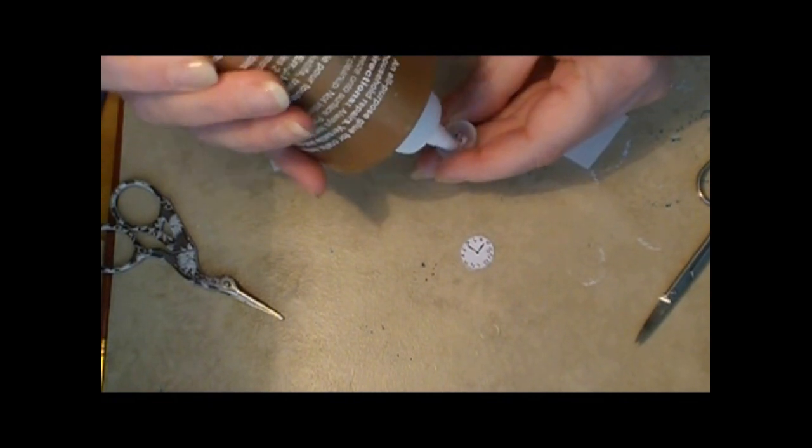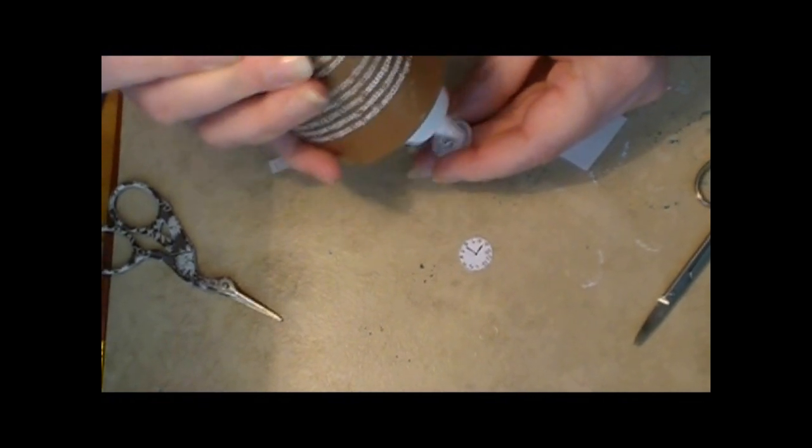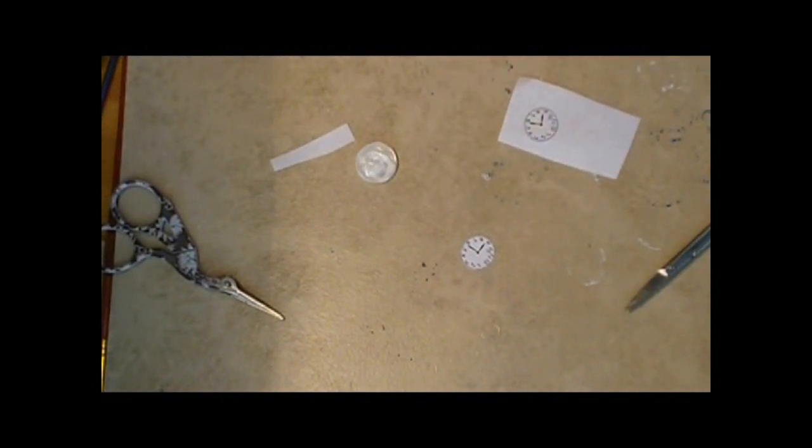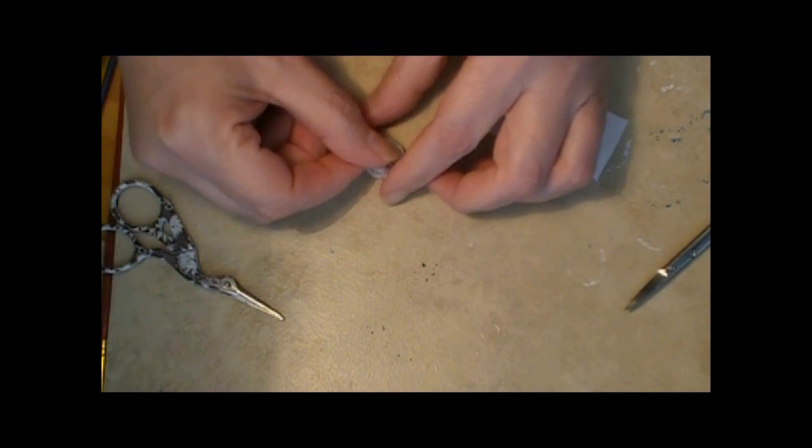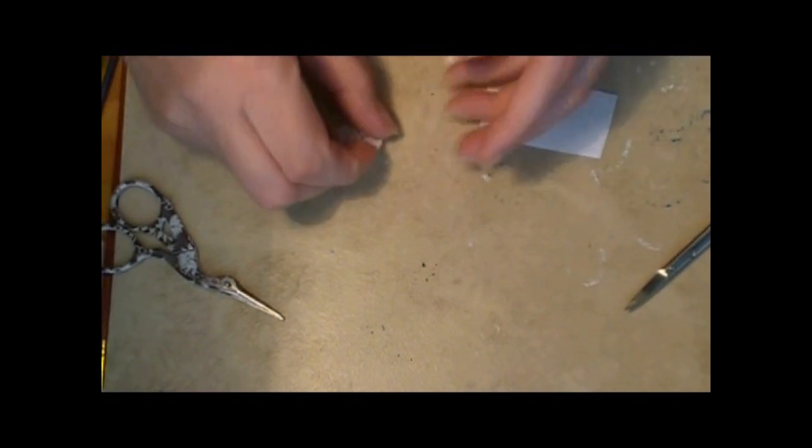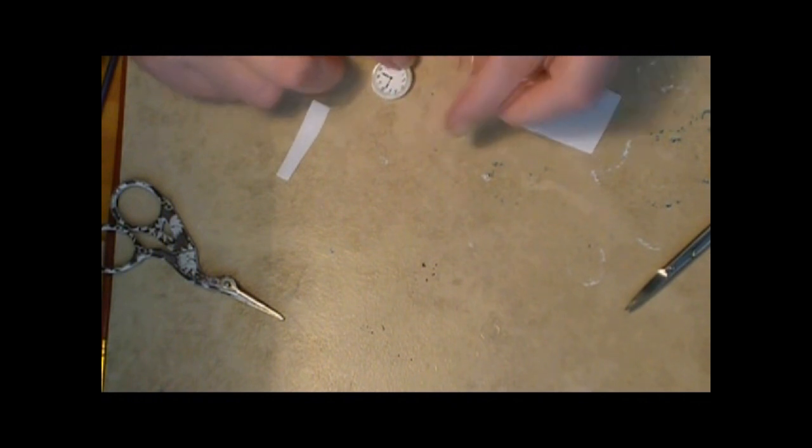And I'm just using craft glue to stick this down, or just regular tacky glue. I like tacky glue because it's thick enough that it will allow the top to remain flat. And we're going to push our picture down on there.